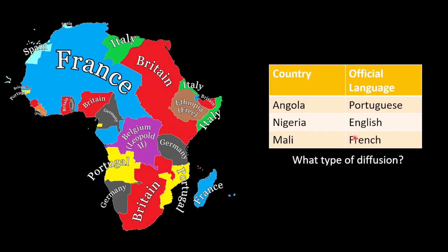What types of diffusion brought these languages here? Well, this could be a mix of relocation and contagious. Relocation — people from Europe coming here. And then contagious diffusion — once it comes here, people are now learning these languages, maybe because they are forced to, or because they kind of need to, to sell their food. In the cities there is a market specific to the colonies from Europe, and to trade and get economic growth, they have to be able to trade with the Europeans, so they got to learn their language.